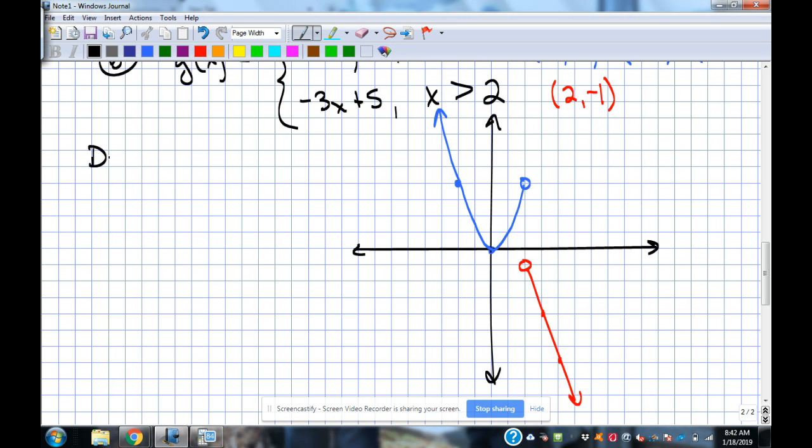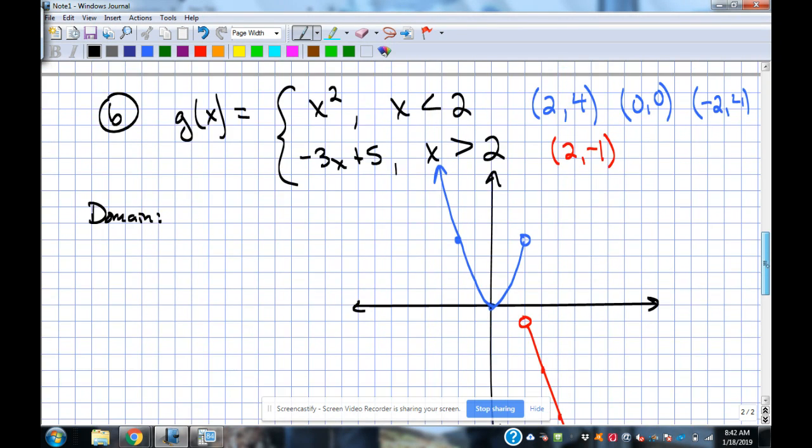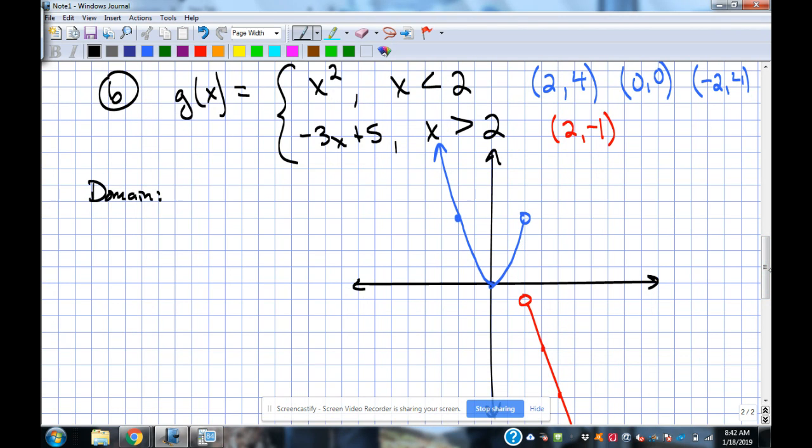All right. Let's get the domain of this particular function. Remember domain? Reading left to right. So what's the where are we starting with our domain? Negative infinity. We're reading across. Negative infinity. Everything's working until we get here. That's open circle. Is that covered by anybody? Another open circle, which means it's not covered, right?